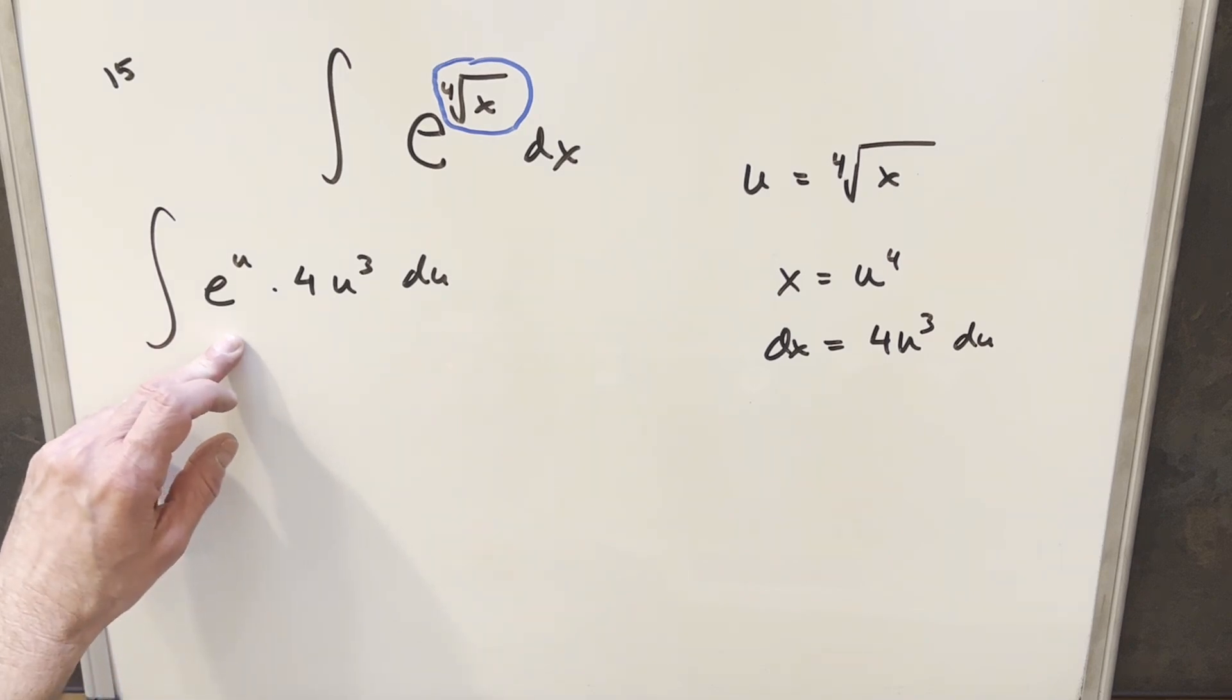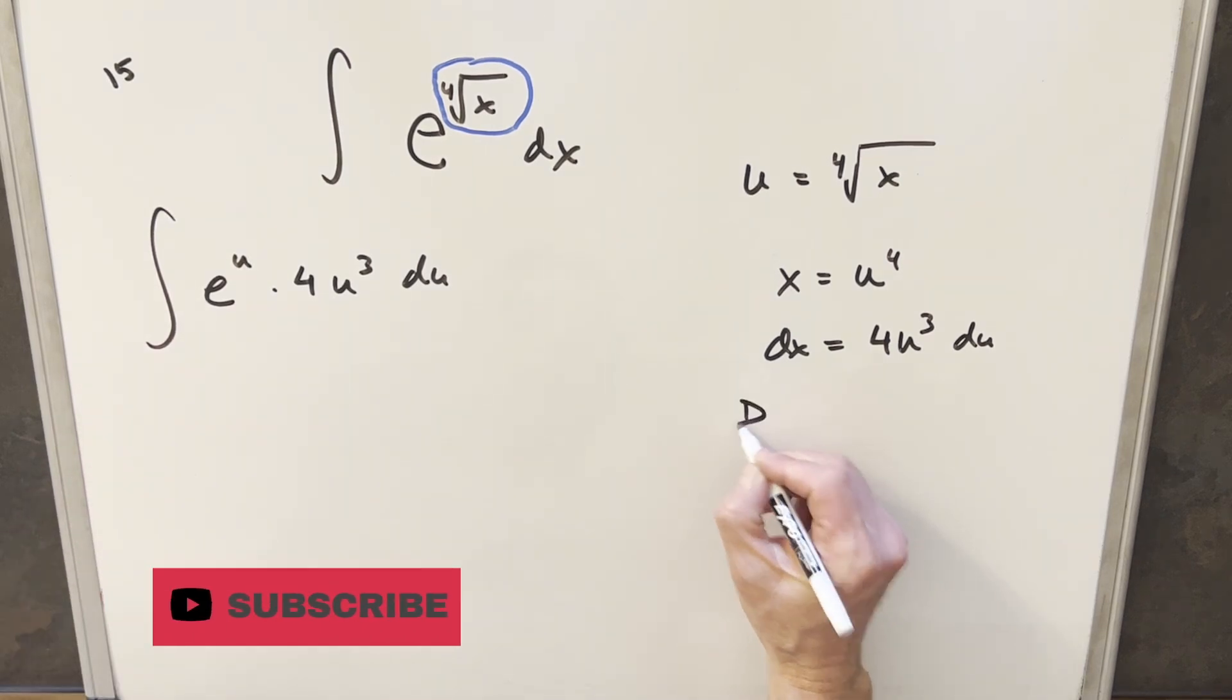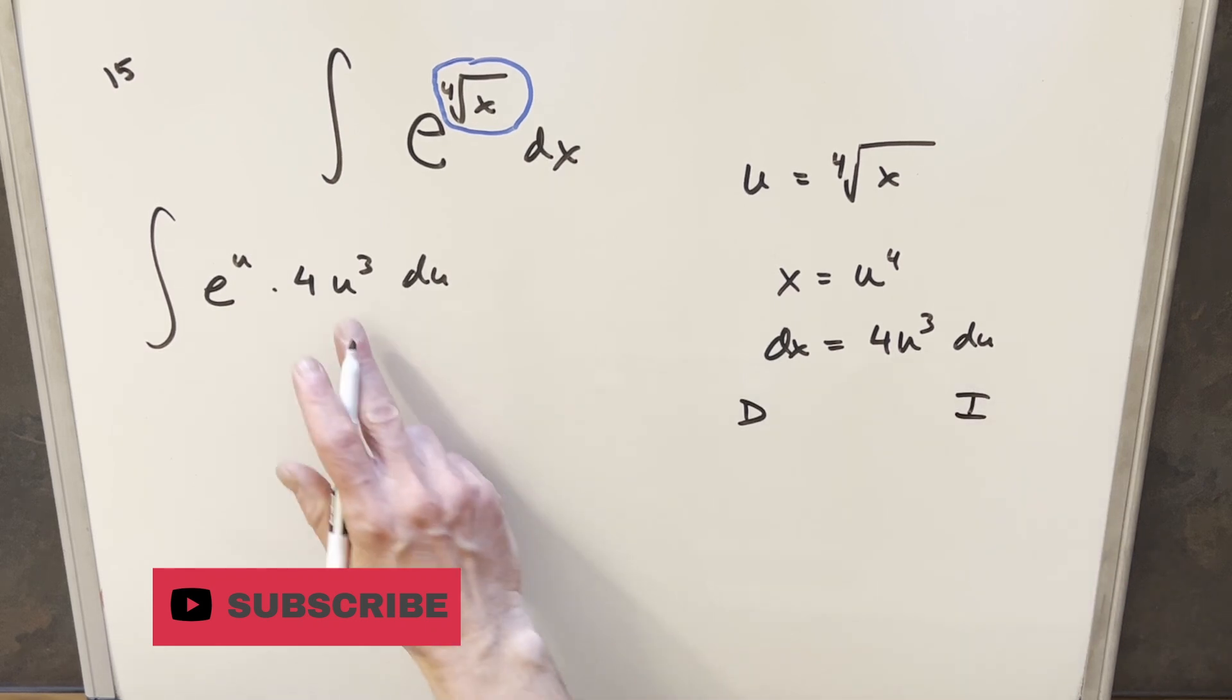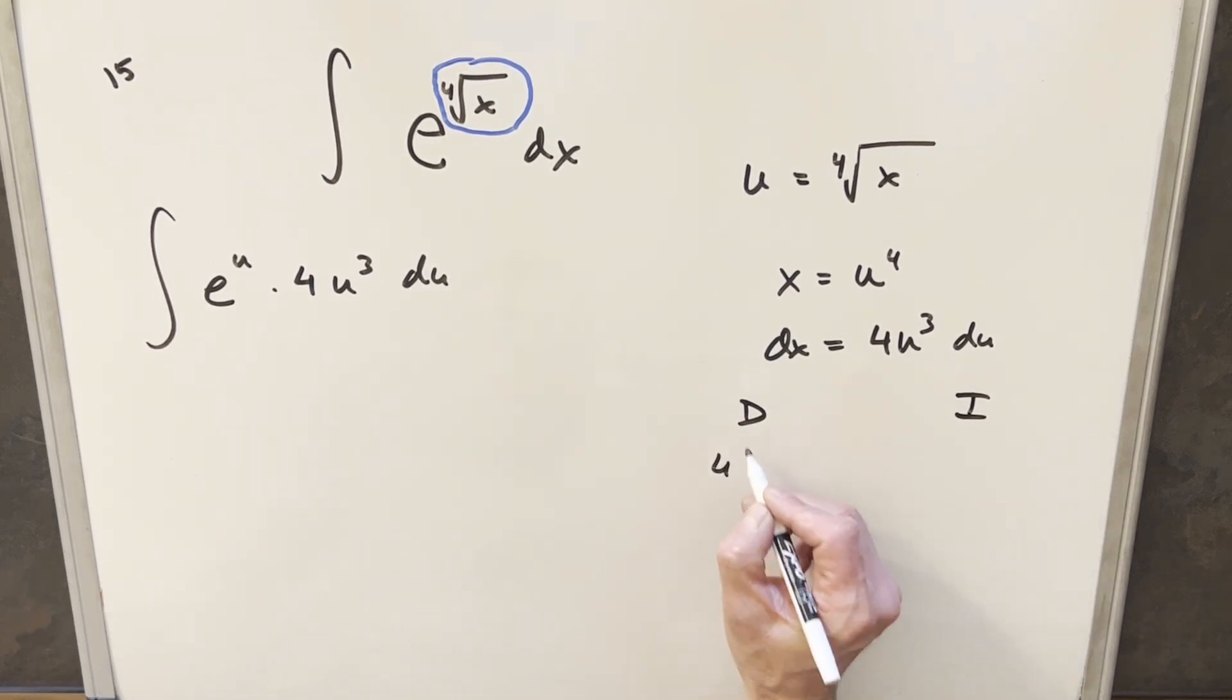But now for this, we can finish this with integration by parts. I'll use the DI method. So we'll do this over here to the right. And I think I'll differentiate this part. So we'll differentiate 4u cubed and just integrate e to the u. Now let's see, we're going to have to differentiate multiple times. This is a good use for the DI table as it sets us up to just do this integration by parts over and over again.